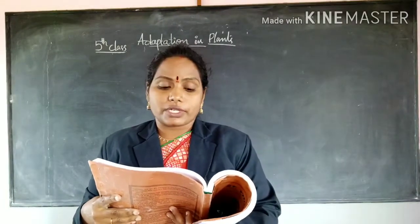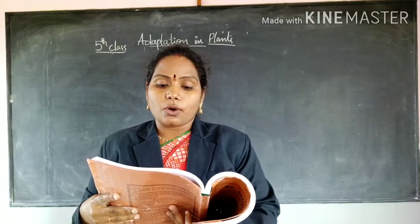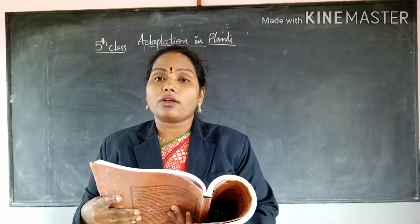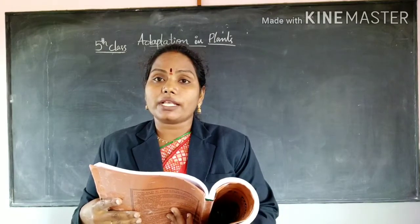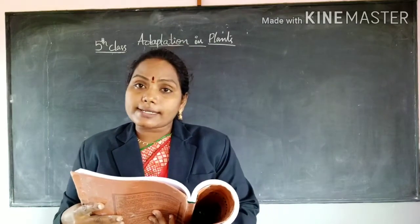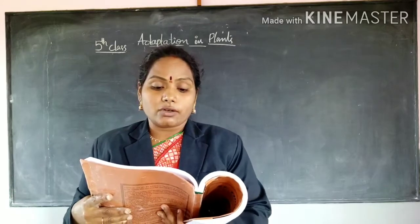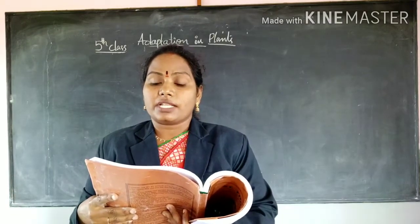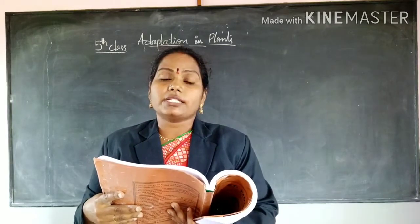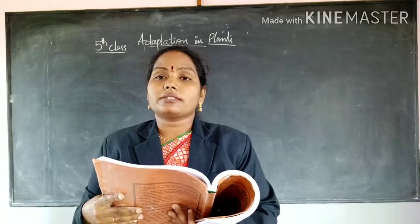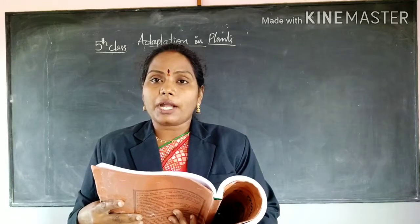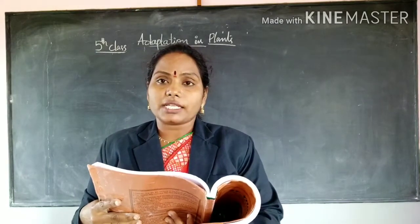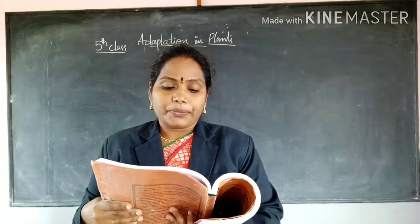Fourth question: plants that grow on land are called — options are: terrestrial plants, floating plants, or aquatic plants. Plants that grow on land are called terrestrial plants. So the fourth answer is option one: terrestrial plants.